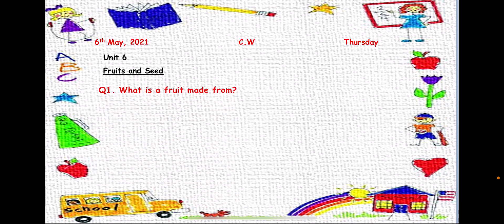Question number 1: What is a fruit made from? So from where we get the fruit? We get the fruit from a plant, from a tree. So on a tree, what grows and from where does the fruit come? Yes, a fruit comes from a flower. A fruit is made from a flower. We will write the answer: A fruit is made from a flower.